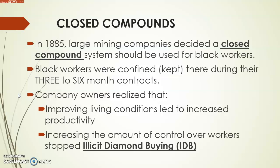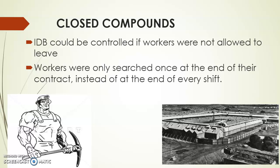What would happen with the normal compound system is that people would try to smuggle diamonds out. They would mine things, and because they were given the freedom to move, many of them would kind of smuggle those diamonds out and make some money for themselves on the side. The closed compound system led to increased productivity and the decrease of illicit diamond buying. Illicit diamond buying could be controlled if workers were not allowed to leave, and workers were only searched once at the end of their contract instead of at the end of every shift. With the closed compound system, you only really had to search at the end, because nobody was really allowed to leave.